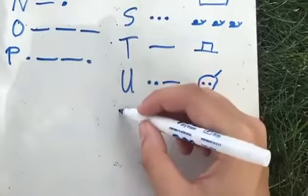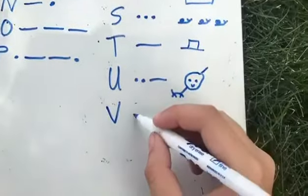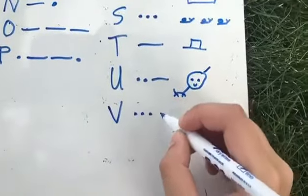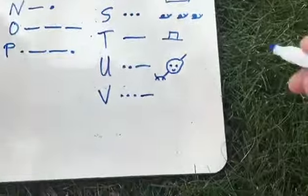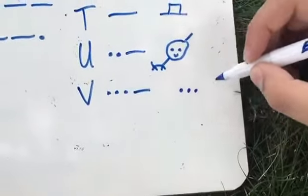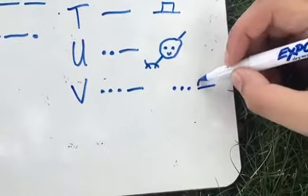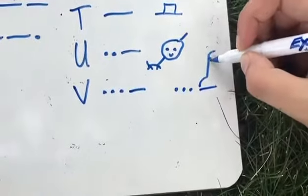And then, lastly we have V, and this one is three dots, and then one line. And this one looks like three little Cheerios or something on the ground, and then this line reminds me of a vacuum trying to clean up the mess.